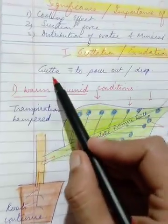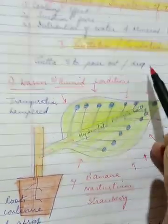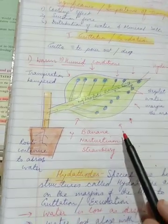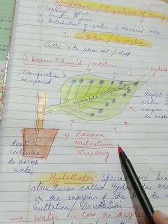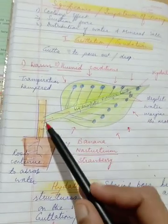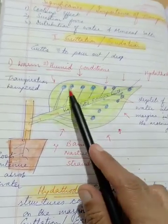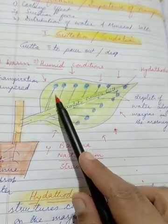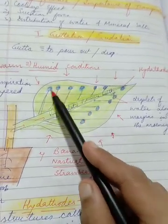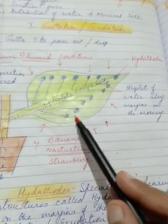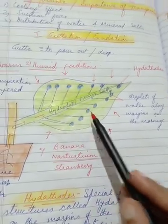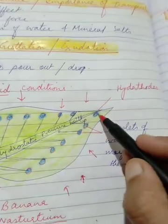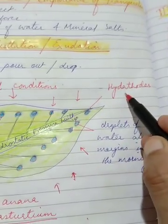The term gutta means to pour out or drop. Now what happens, certain plants like banana, nasturtium and strawberry, they have special openings at the margin of their veins or at the tip of the veins near the margins. These openings are permanently open. They don't open and close like stomata. We call these openings hydathodes.